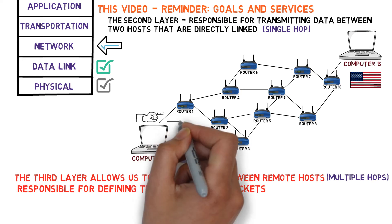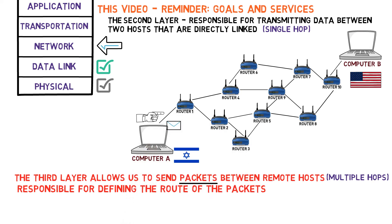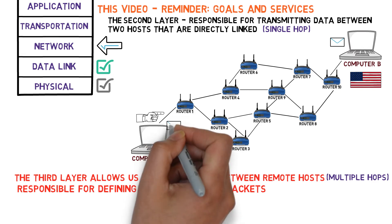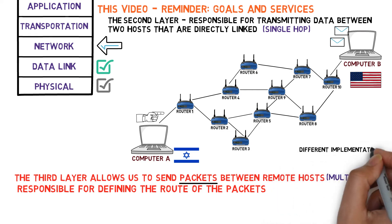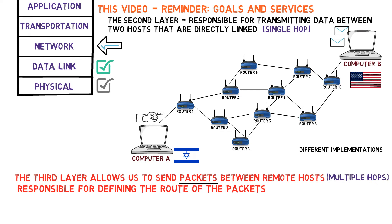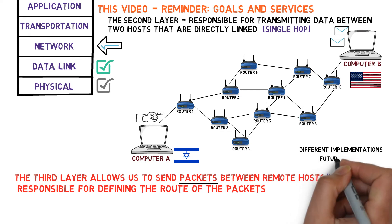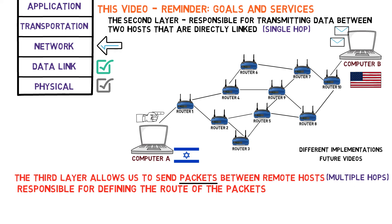So perhaps when A sends a packet to B, it will go through routers 1, 4, 6, 7, and 10. Then another packet will be sent, and this time it will be routed through routers 1, 4, 9, 8, and 10. Different implementations of this layer may work differently, as we'll see in future videos. Some implementations allow for such flexibility where each packet is routed on a different route, and some don't.